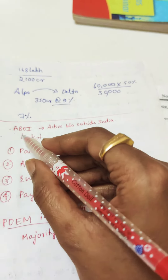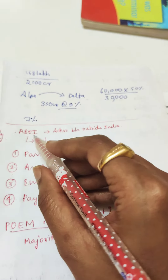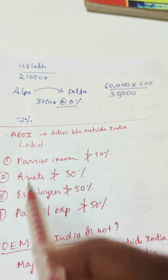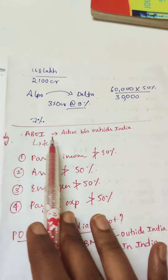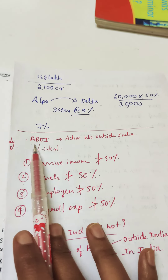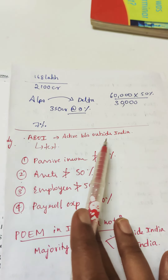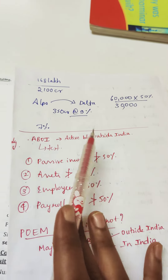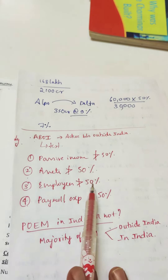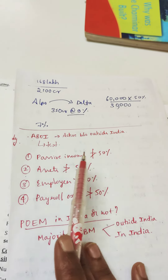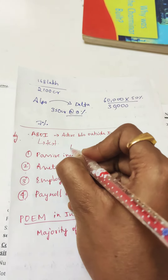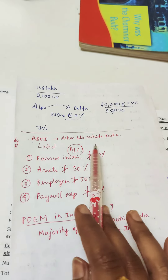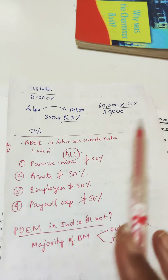One of the important topics is the ABOI test in NR taxation. This ABOI test determines how we know whether the active business is outside India or not. There are four conditions which should all be satisfied to prove that the active business is outside India.